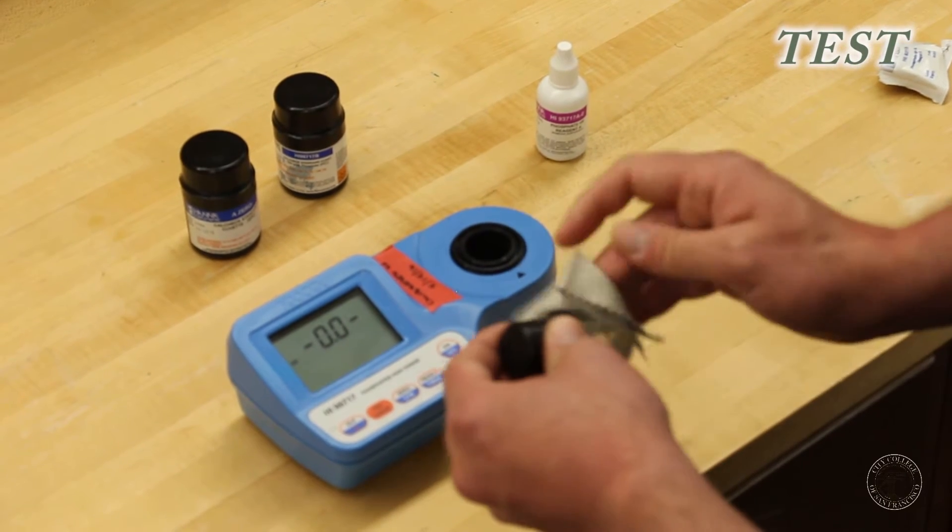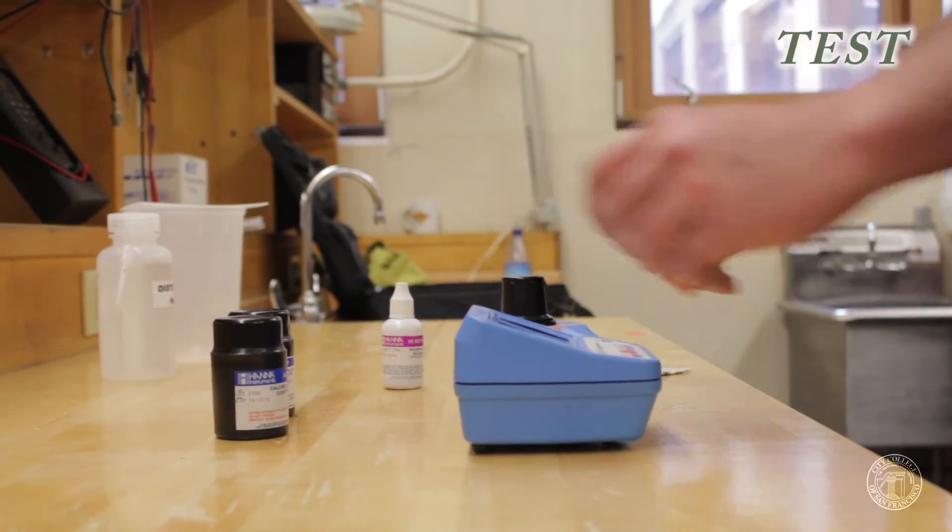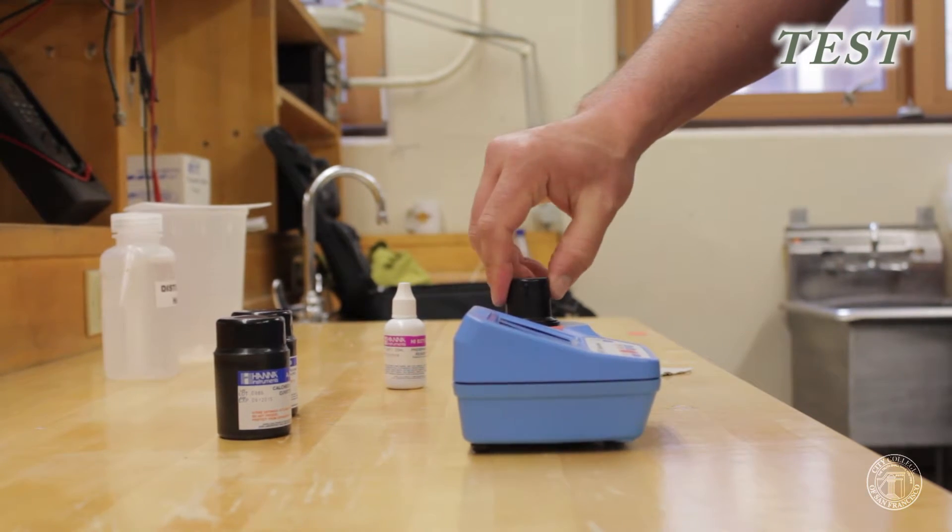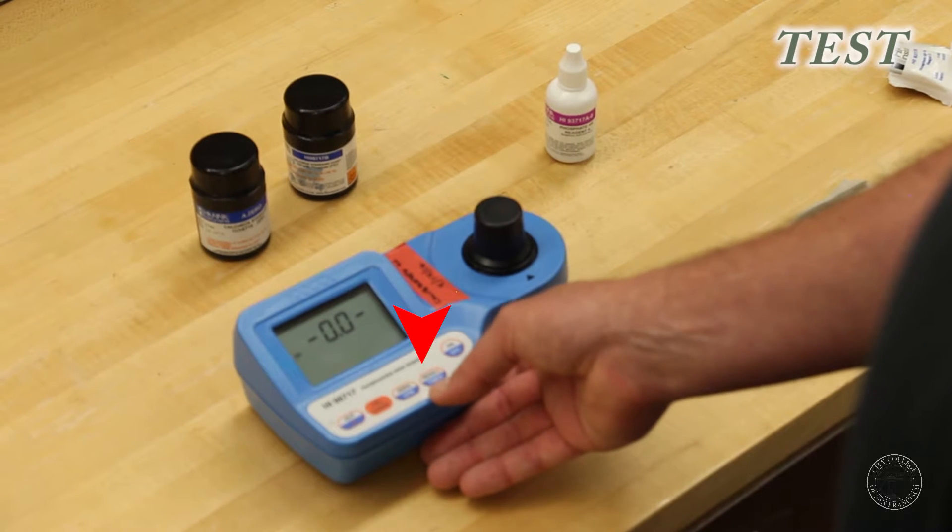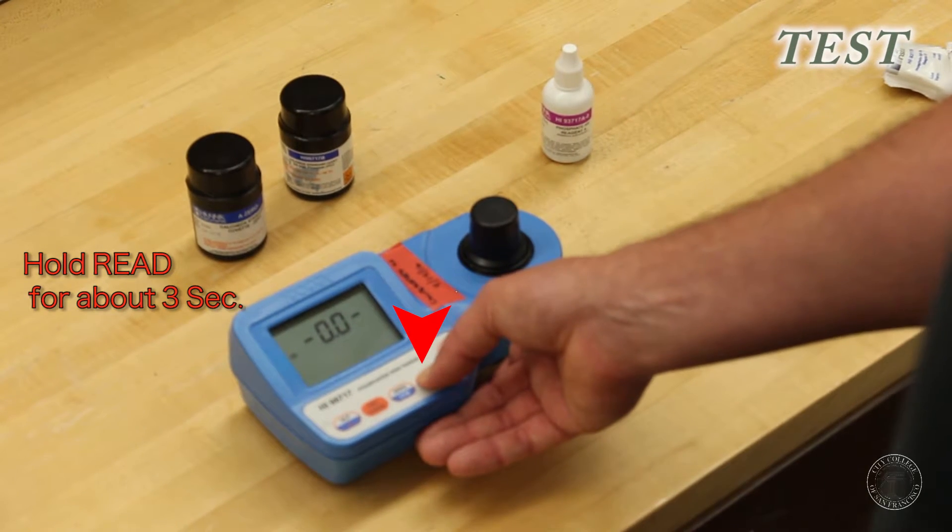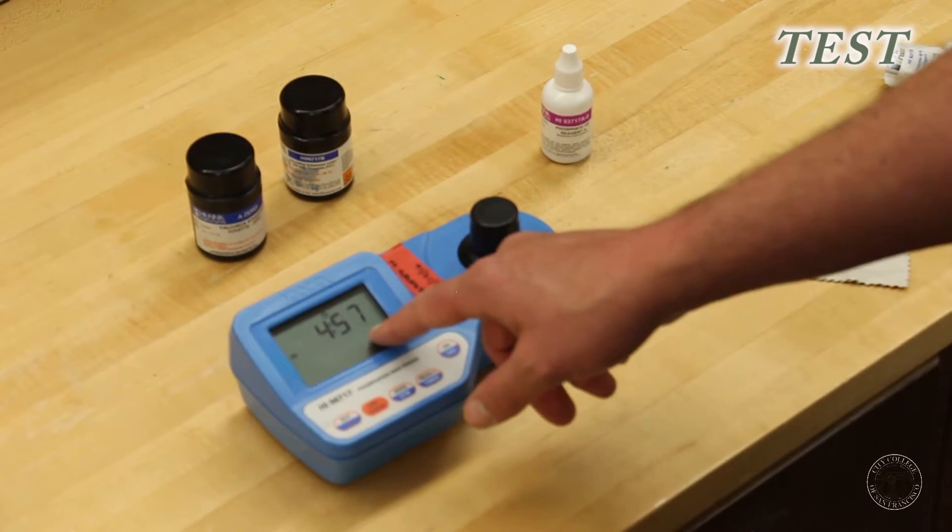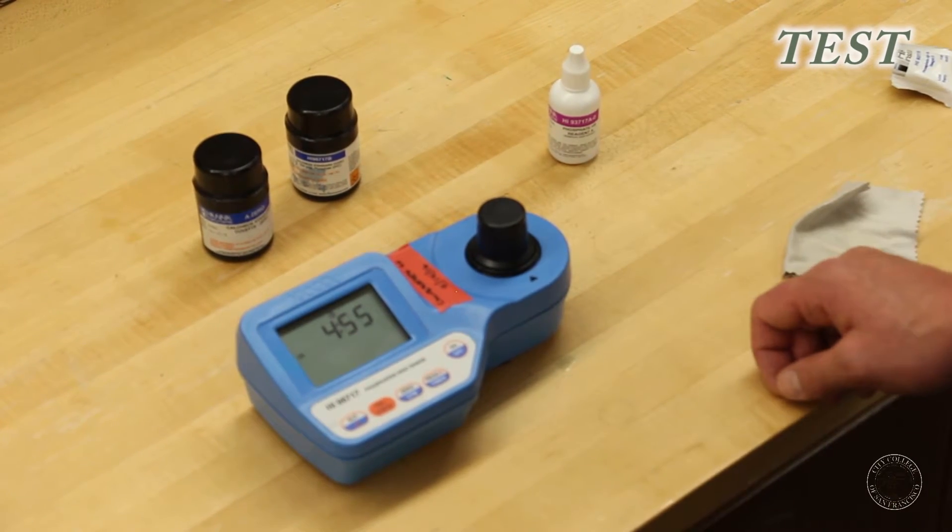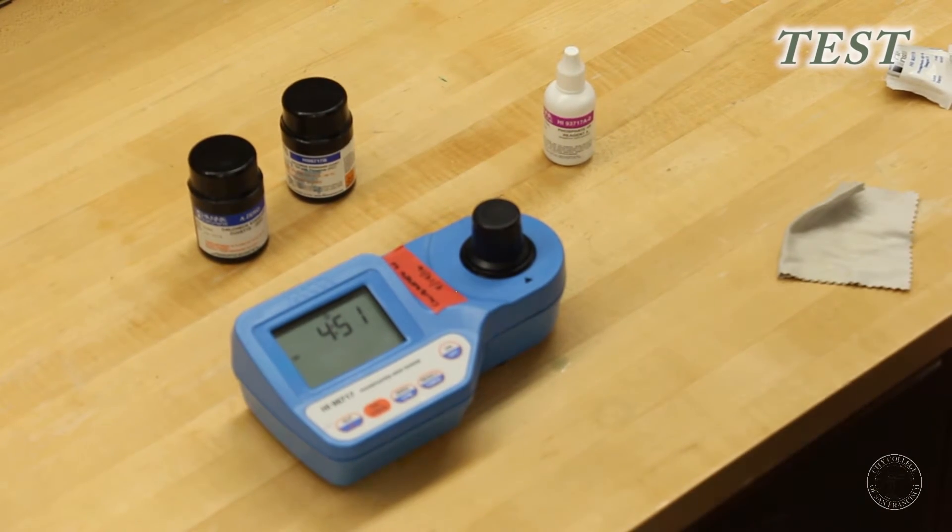We will wipe our cuvette and place it into the machine. Turn until the arrows are aligned. And then for this, taking a real reading, you want to hold the read for approximately three seconds. And then your read timer will come up. It needs five minutes to take a proper reading. And now we'll wait for the timer to reach the time of zero.